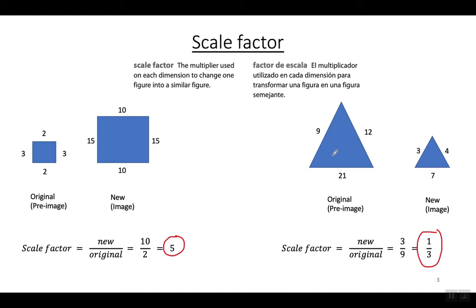La factor de escala es el multiplicador utilizado en cada dimensión para transformar una figura en una figura semejante. Aquí tengo dos rectángulos — es obvio que están multiplicando todos los lados de este rectángulo por cinco para coger los lados correspondientes en este rectángulo.